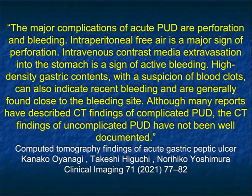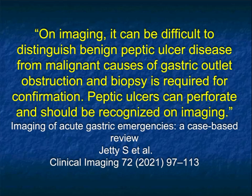The major complications of peptic ulcer disease are perforation and bleeding. Intraperitoneal free air is a major sign of perforation. Intravenous contrast media extravasation is a sign of active bleeding. High-density content in the stomach with suspicion of blood clots can also indicate recent bleeding, though we may not see the site of bleed. Although many reports have described CT findings of complicated peptic ulcer disease, the CT findings of uncomplicated peptic ulcer disease have not been well documented. It can be difficult to distinguish benign peptic ulcer disease from malignant causes, and peptic ulcers can perforate and should be recognized on imaging — the key to that is distending the stomach.